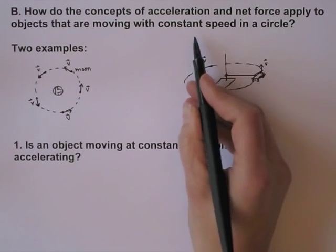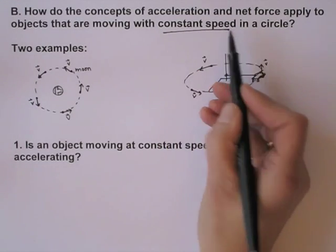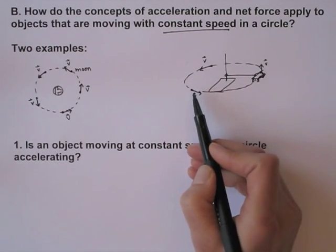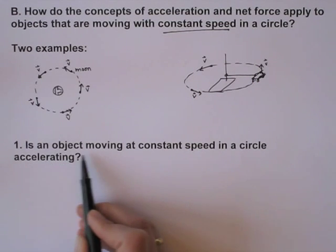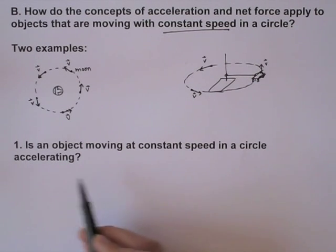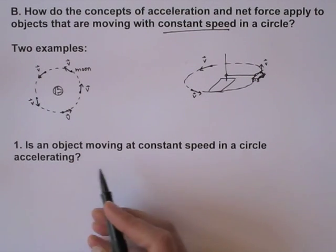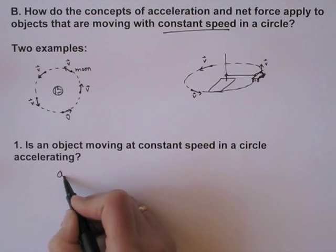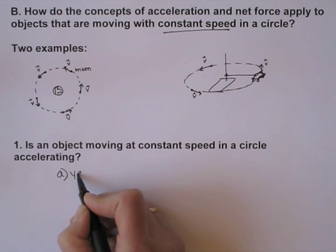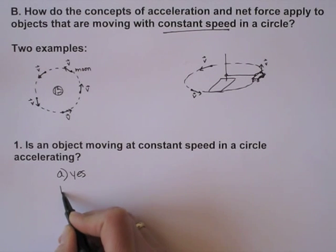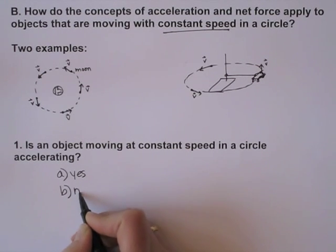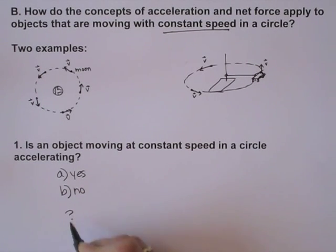Constant speed means that the magnitude of the velocity vector is constant. Is an object moving at constant speed in a circle accelerating? What do you think — yes or no? Decide your answer.